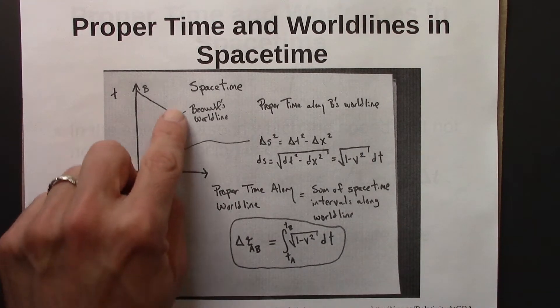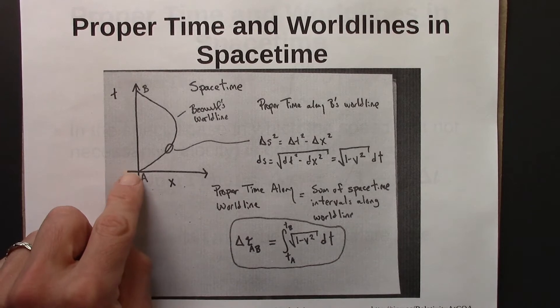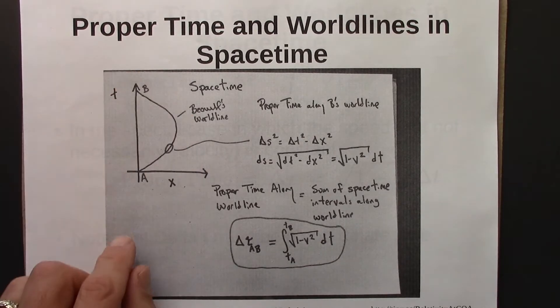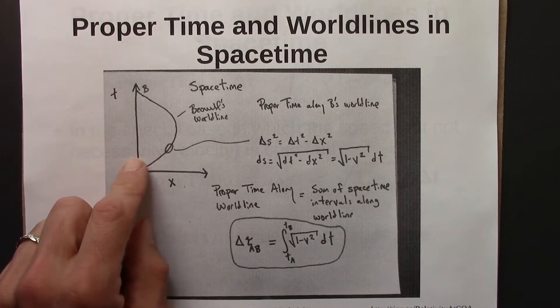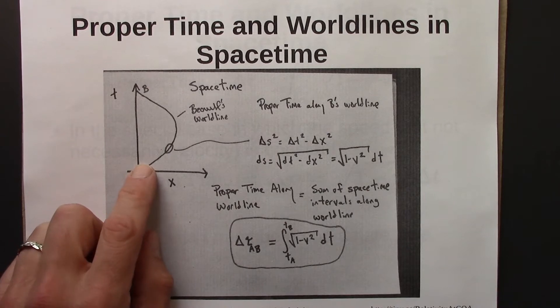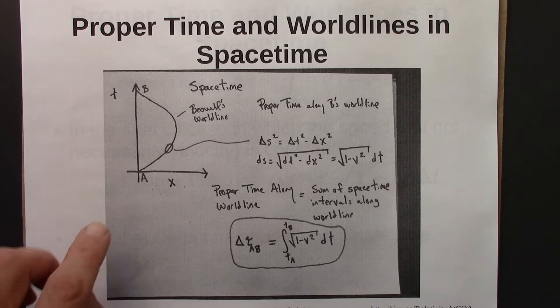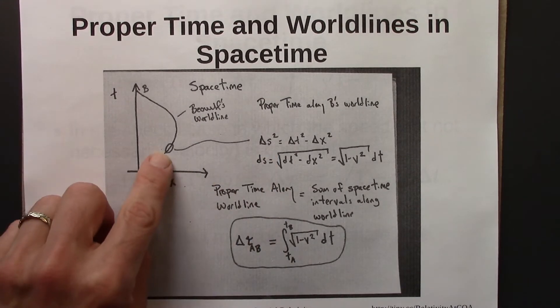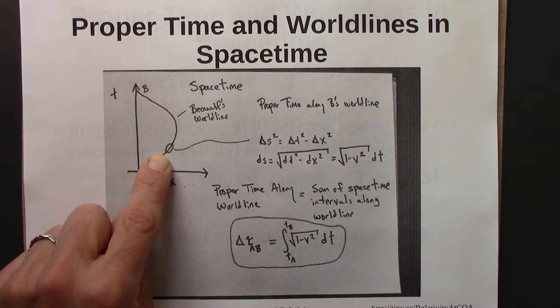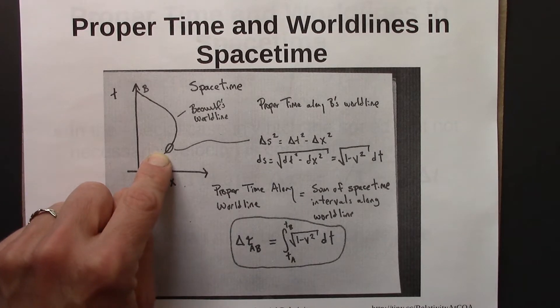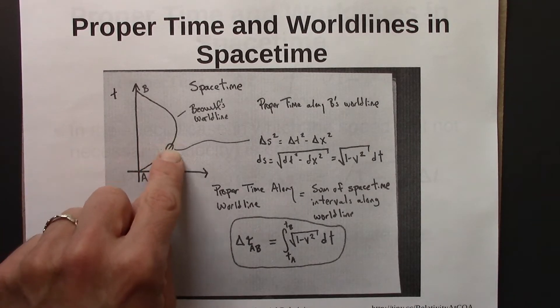So we'd want to know, okay, well what proper time interval would be experienced or read by this clock? And we said, alright, well we don't have a formula for proper time, but we do have a formula for the space-time interval. And that's the time interval along a straight line path in space-time, a straight line world line.